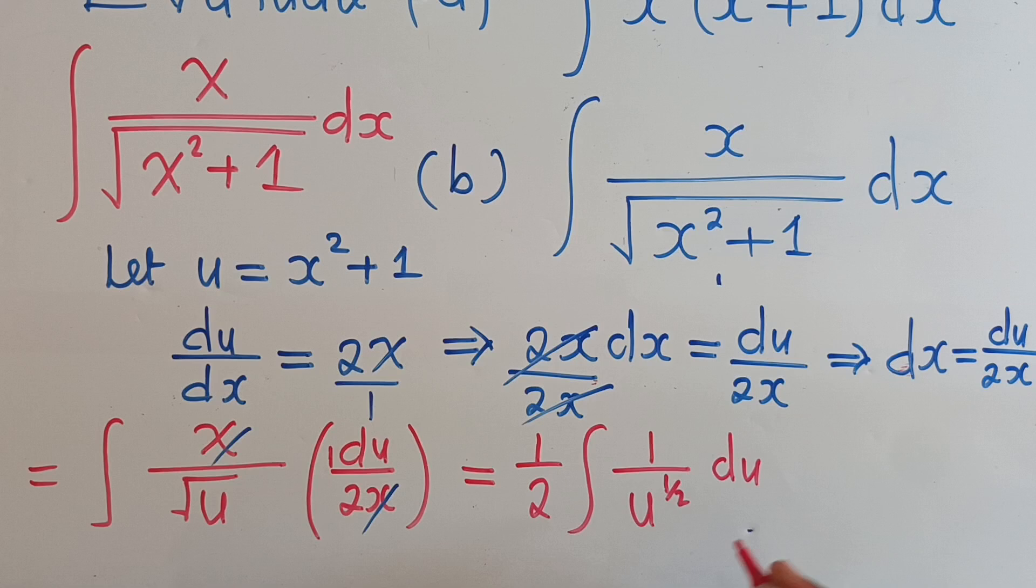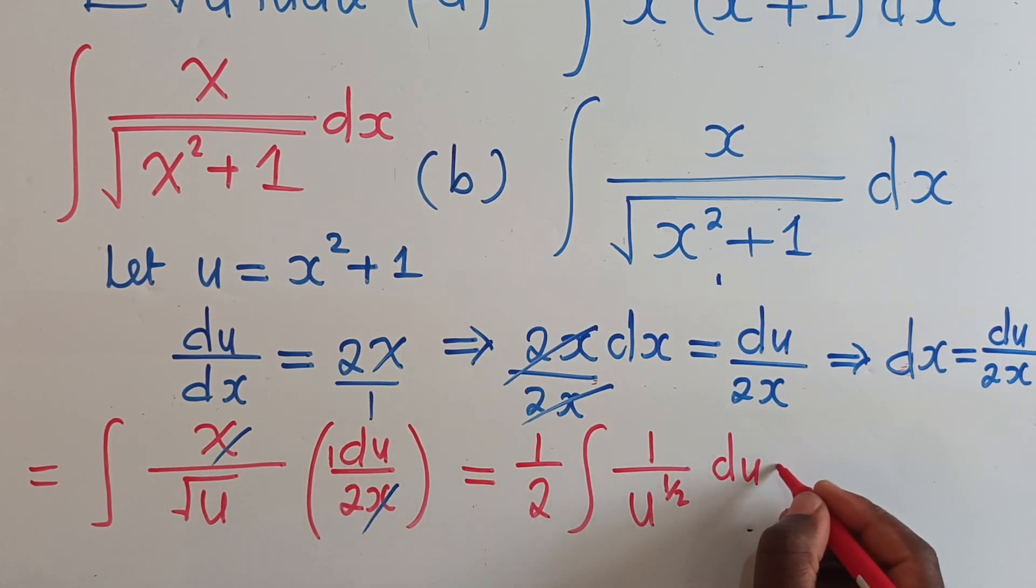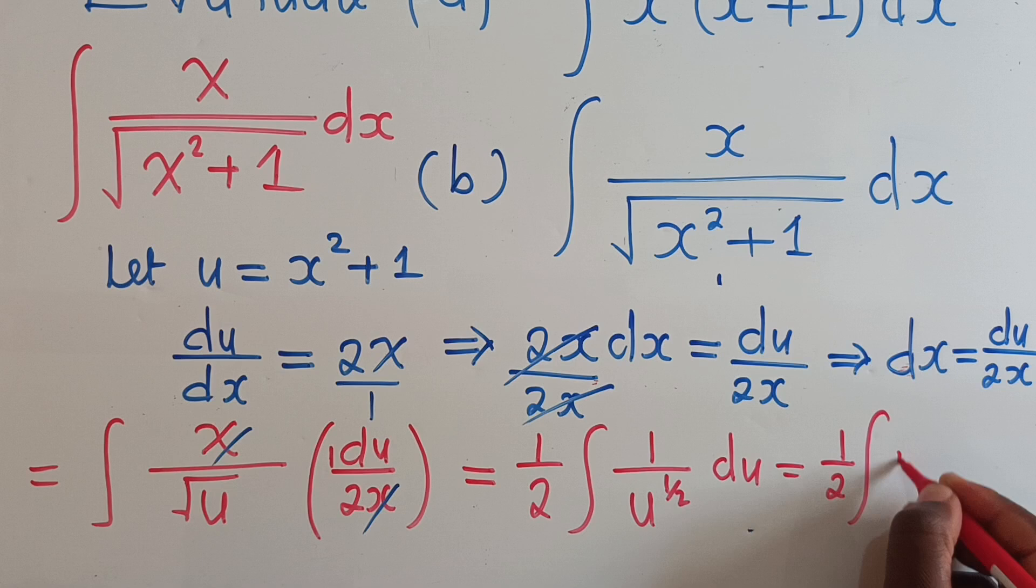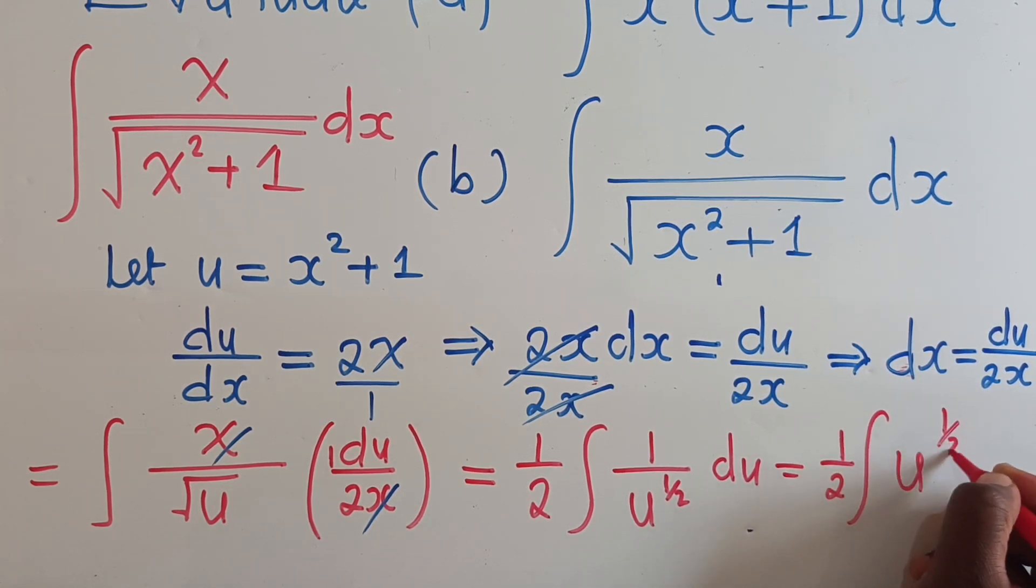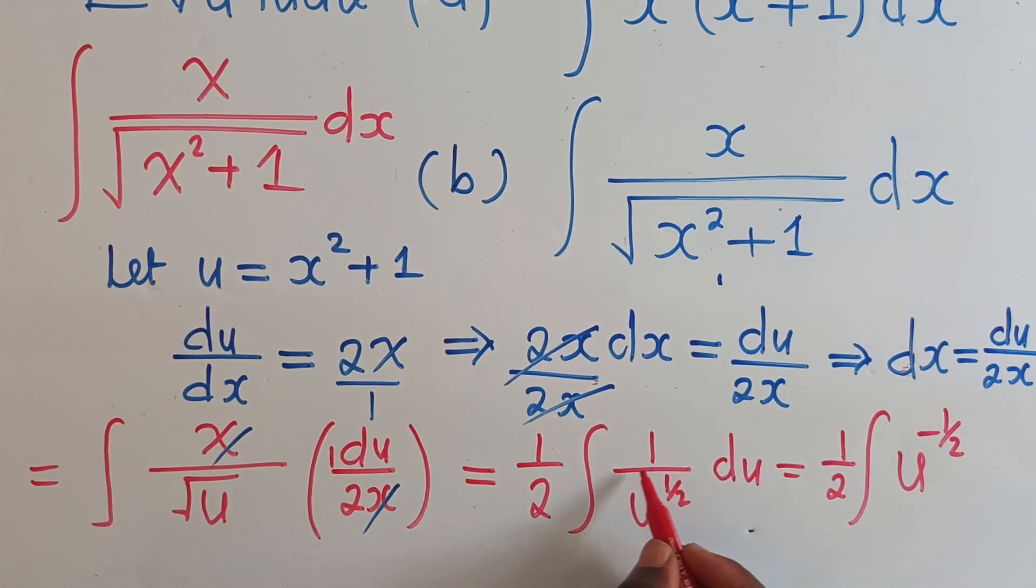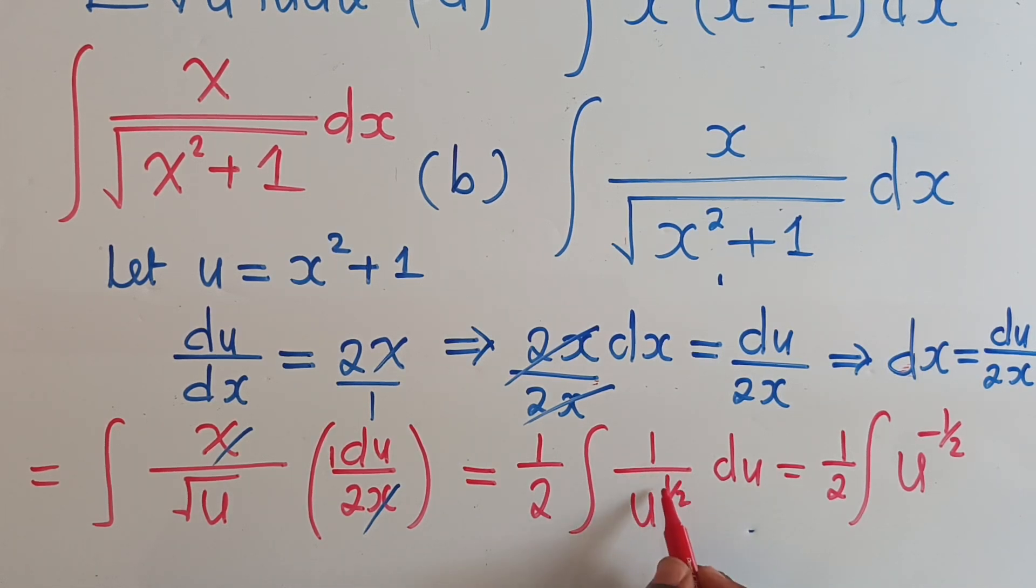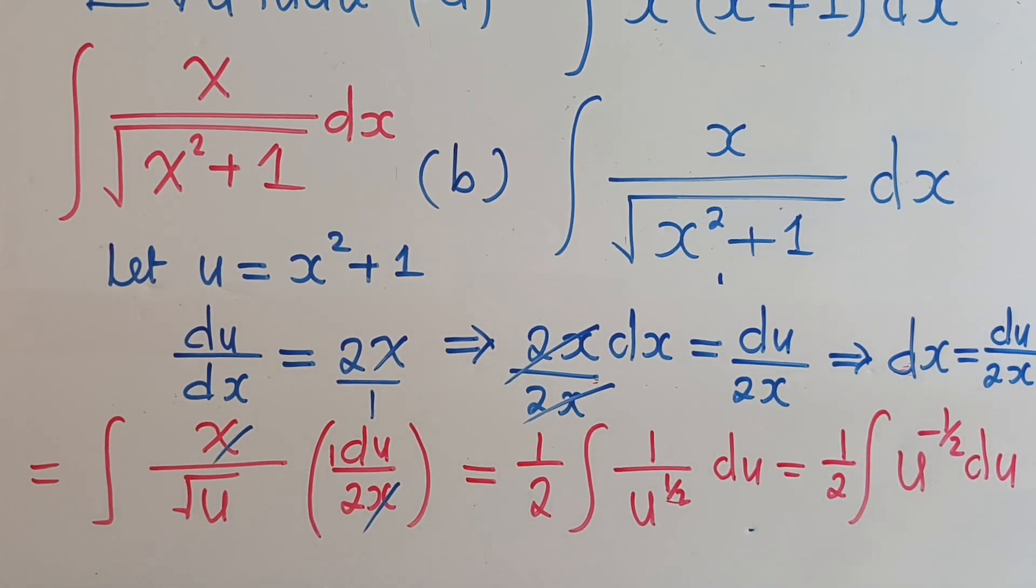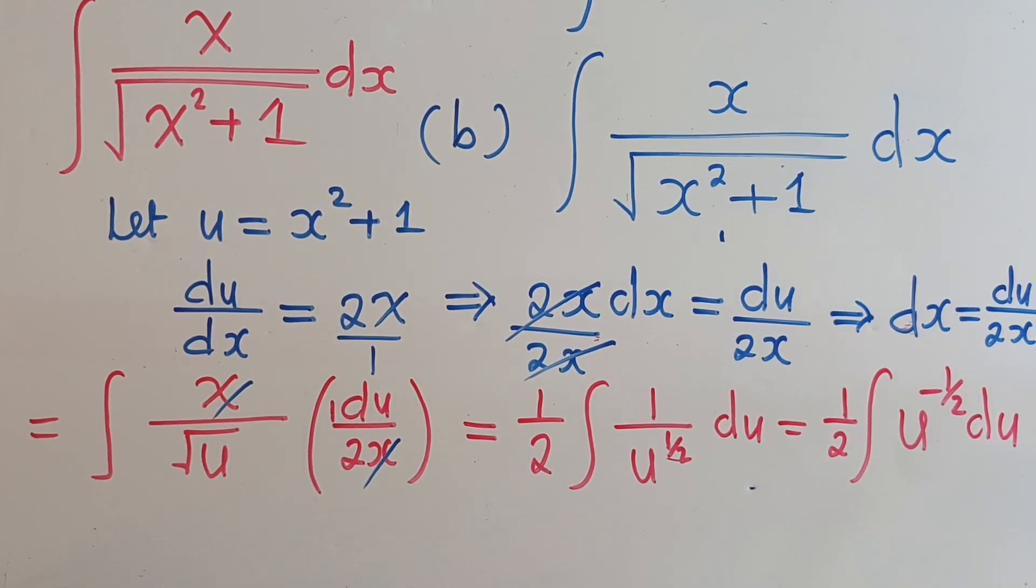And we have a du here. This will go on top, so we shall have u to the negative one-half du. When we integrate this, we add a one.